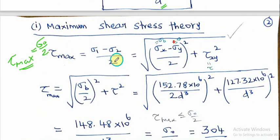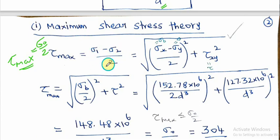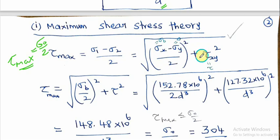The formula for maximum shear stress is: τ_max = (σ₁ - σ₂)/2, which equals the square root of [(σx - σy)/2]² + τxy². We will use this formula to find the principal stresses.